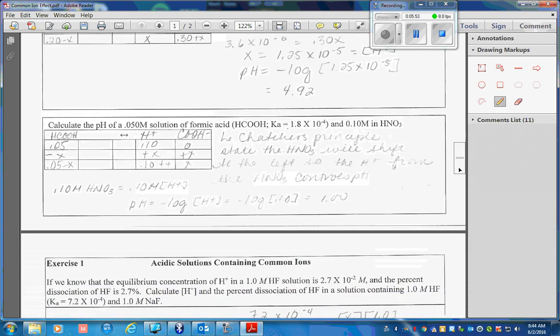Our next problem asks us to calculate the pH of a 0.05 molar solution of formic acid that also has a strong acid. HNO3 is one of the strong acids. It dissociates completely and quickly into its ions.